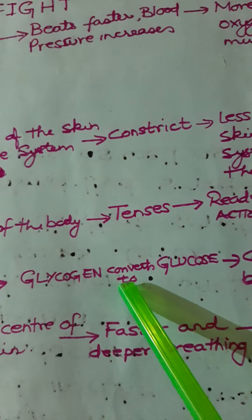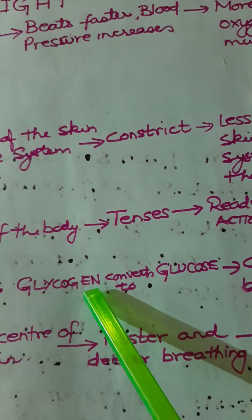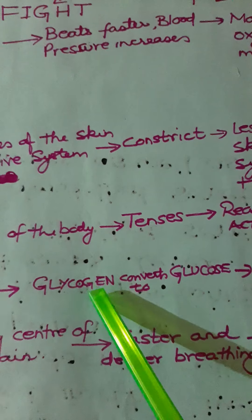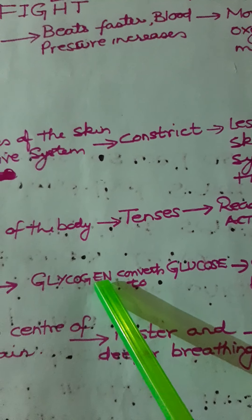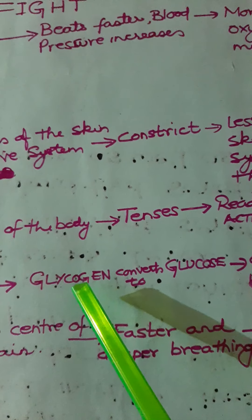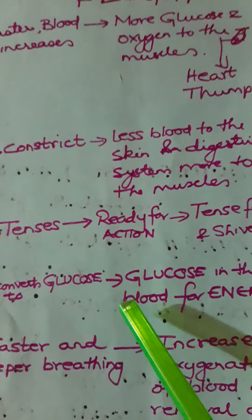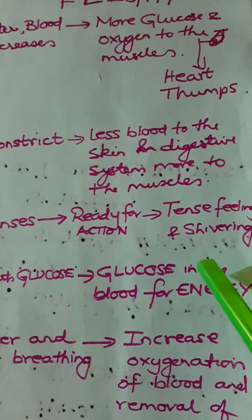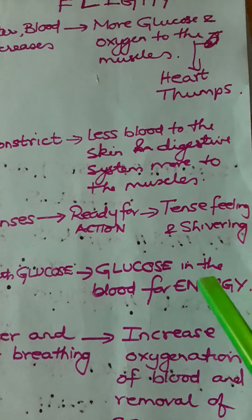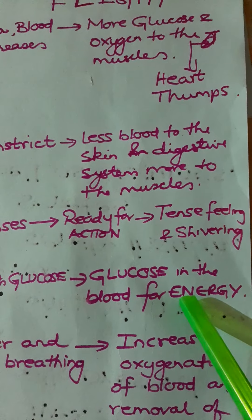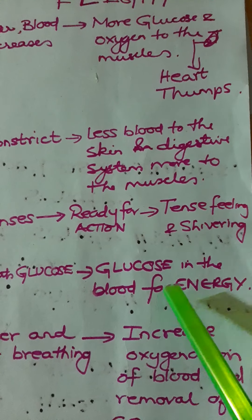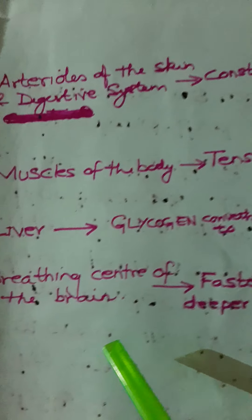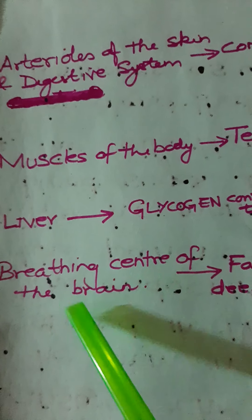In the liver, glycogen is converted to glucose. Extra glucose is always stored as glycogen in the liver, but in times of emergency adrenaline converts the glycogen to glucose. When this glucose enters the bloodstream, it supplies the person with extra energy.